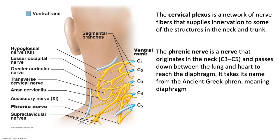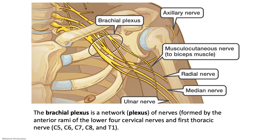We have several plexuses to cover. A plexus is a network of nerve fibers that supply innervation to some structure. The cervical plexus supplies innervation to structures in the neck and trunk. The phrenic nerve originates in the neck and passes down between the lung and heart to reach the diaphragm. The brachial plexus is a plexus in the arm, and from it we get three nerves you need to know: the median nerve, the ulnar nerve, and the radial nerve.